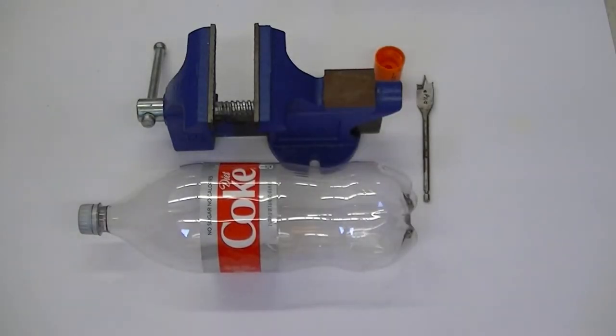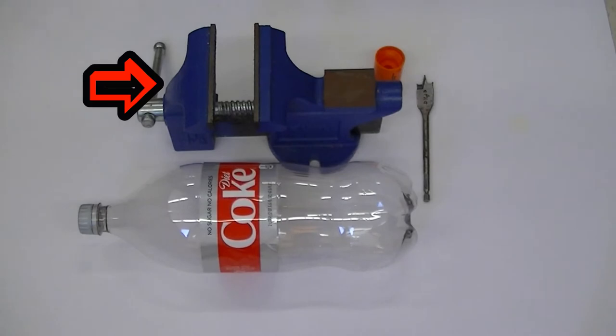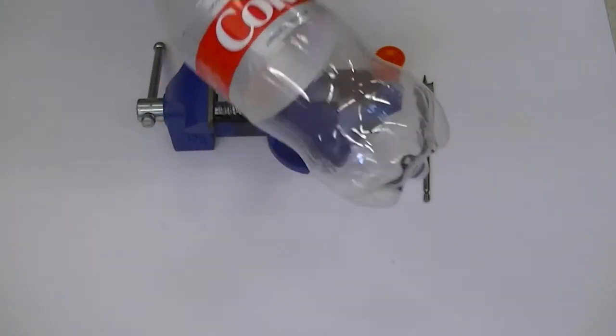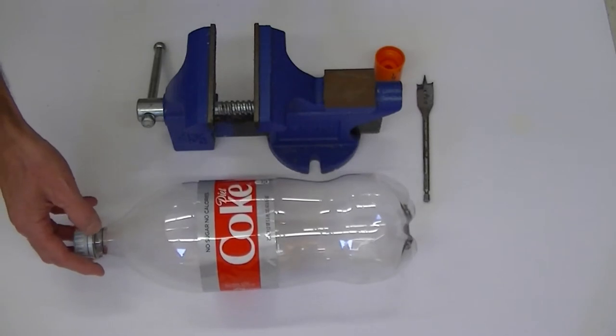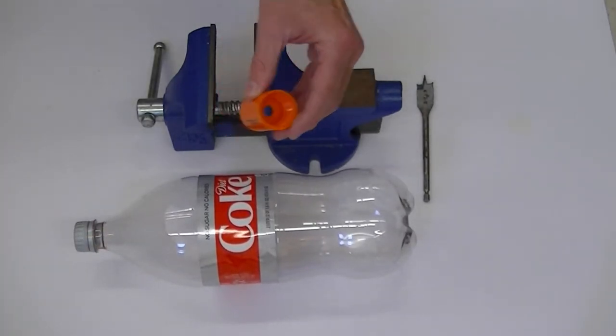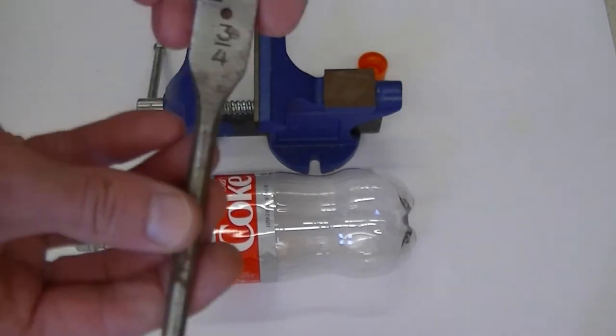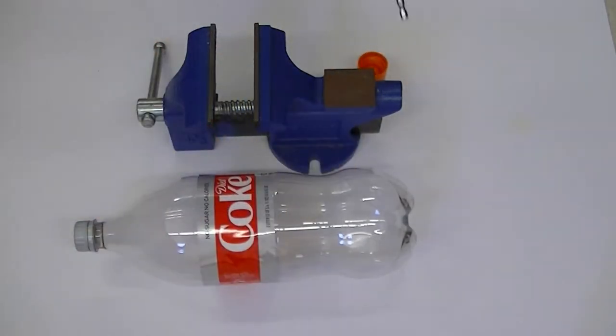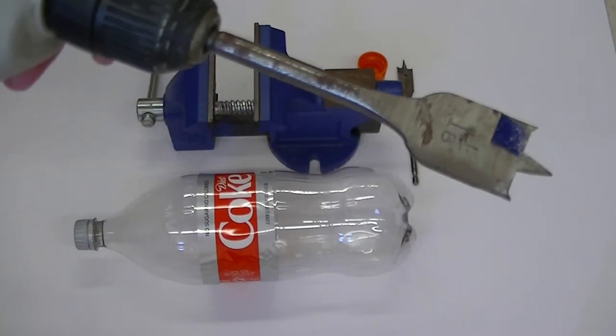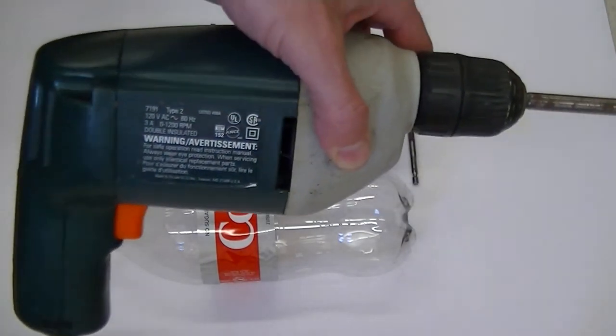To start making your Geyser Guide, you'll need a vise, a 1 or 2 liter soda bottle, a tornado tube, a 3 1/4 inch boring drill bit, a 1 1/8 inch boring drill bit, and a drill.